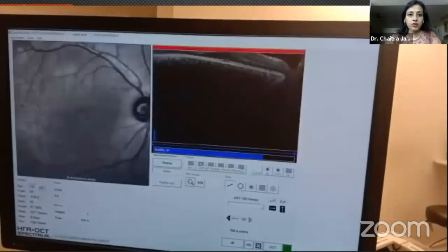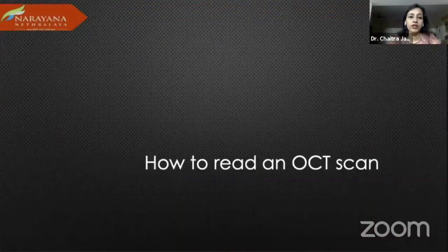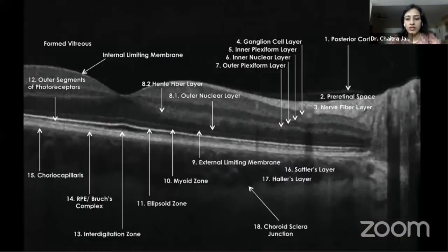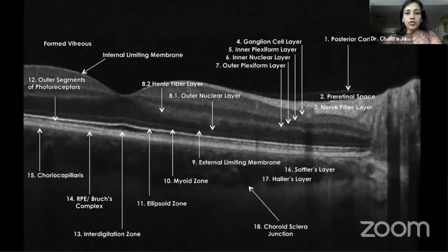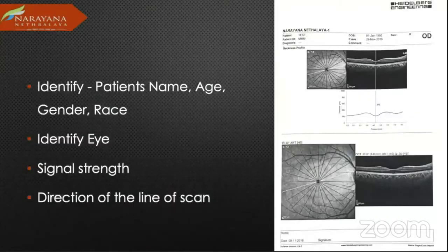How do you read an OCT scan? Before going into the details, this is something we all need to learn and be aware of — the international nomenclature for OCT and the different layers. Initially we used terms like IS/OS, which is still there in a lot of classifications, but more recently the ellipsoid zone, the myoid zone, and the interdigitation zone are used. We need to be aware of that.